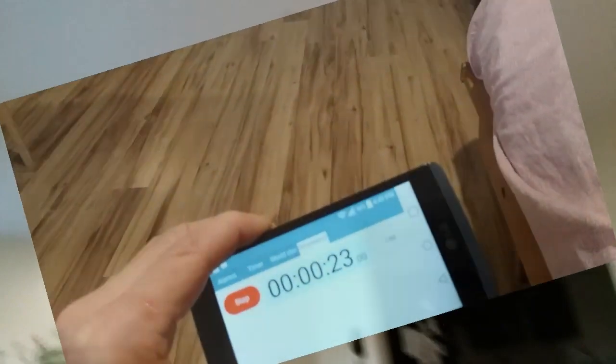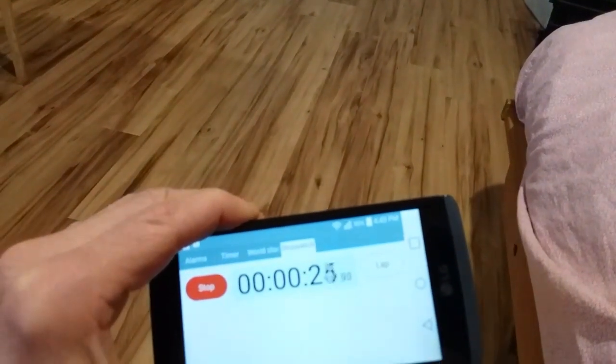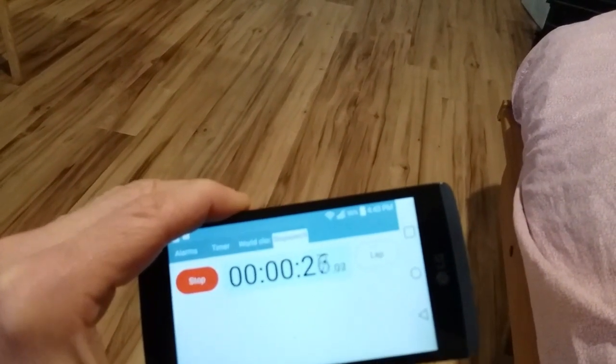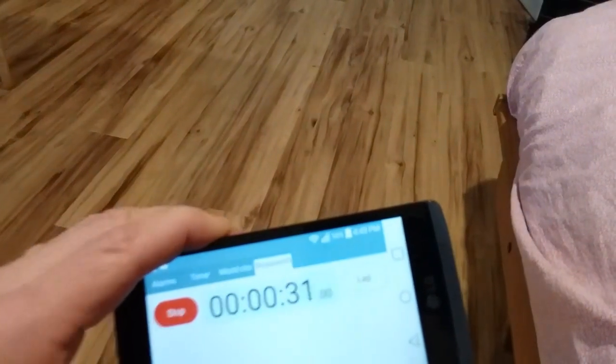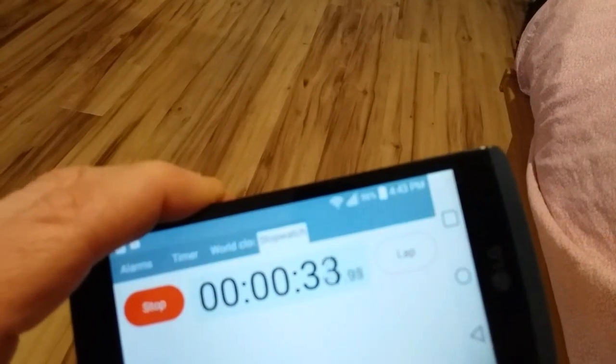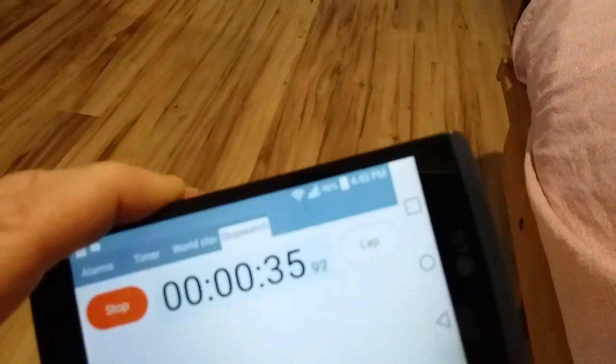And then what you want to do is pull that pendulum back parallel with the floor and start a stopwatch and do it for 25 oscillations. That's back and forth to equal one full oscillation, and time that on your stopwatch.